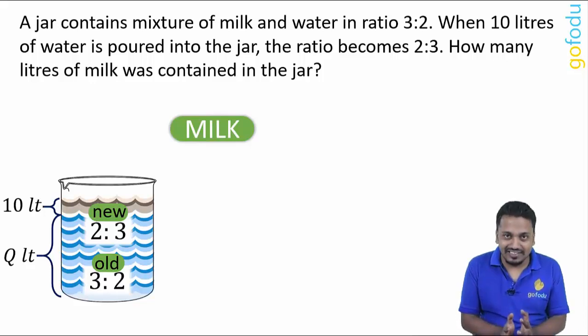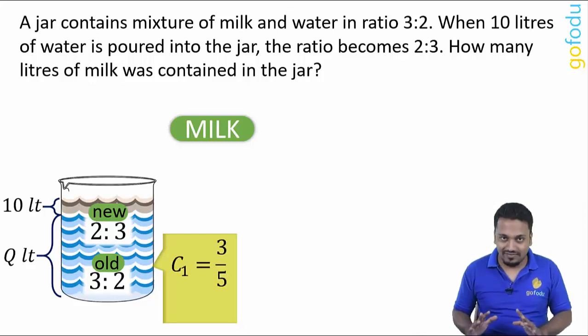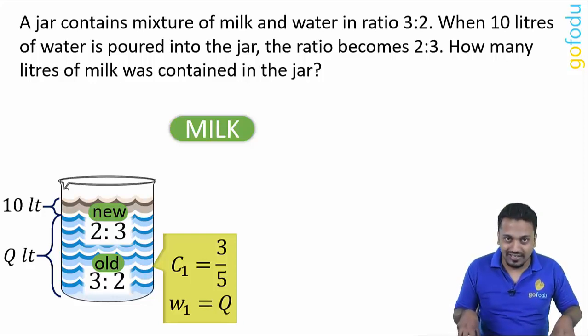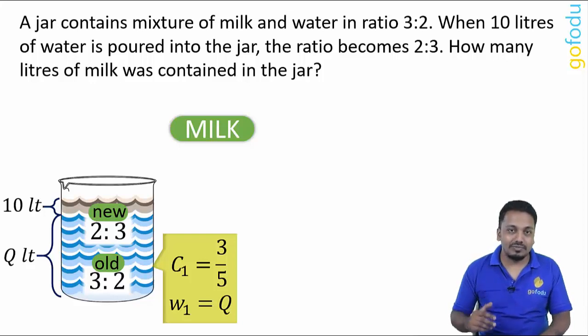In the original mixture, milk to water is 3 to 2. So proportion of milk is 3/5 and quantity of mixture is Q. Now instead of taking milk proportion, we can also proceed by taking milk concentration which will be 60% in the first mixture.